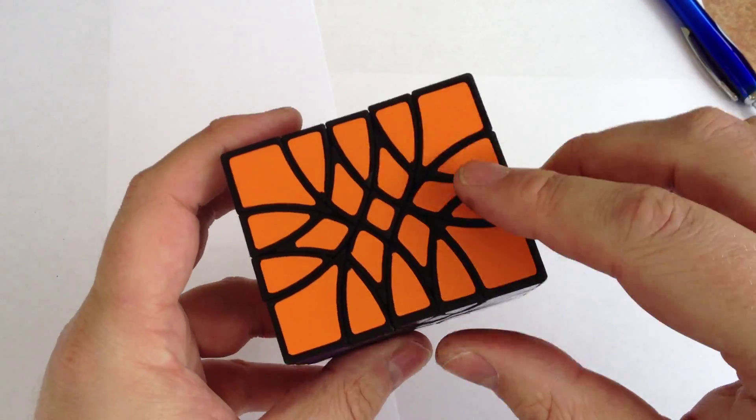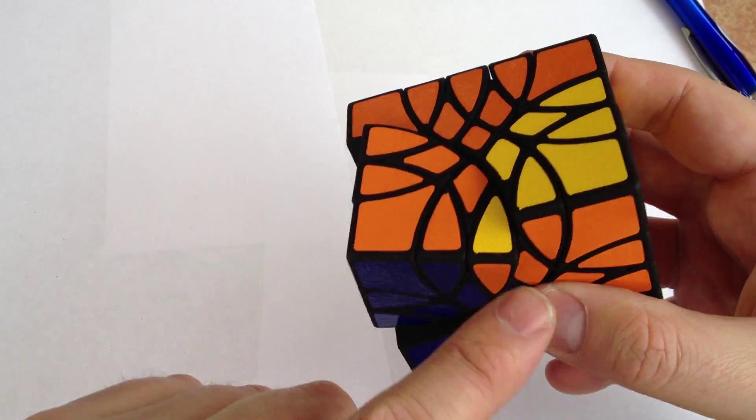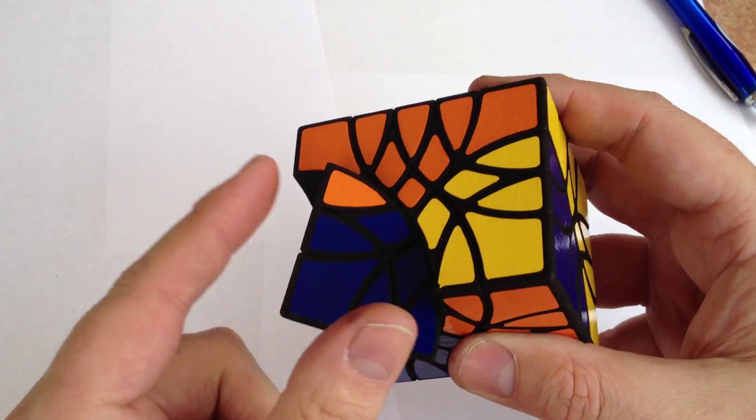But on this axis here, the corners only share one piece. So, you can see that piece there is the shared piece.